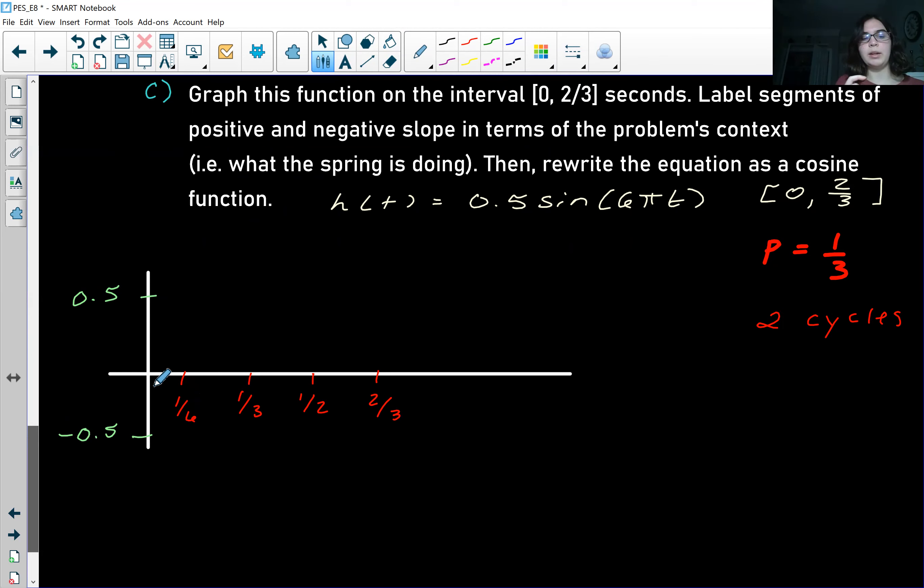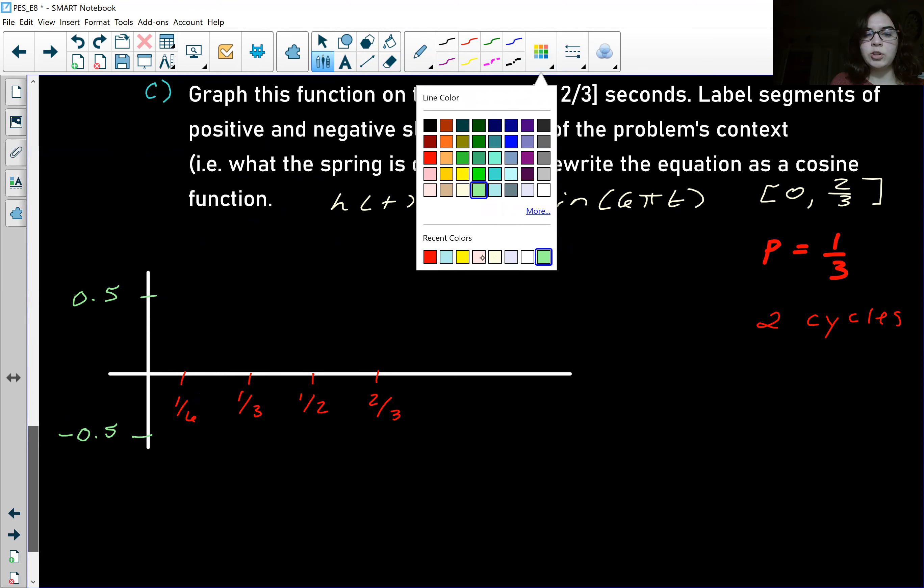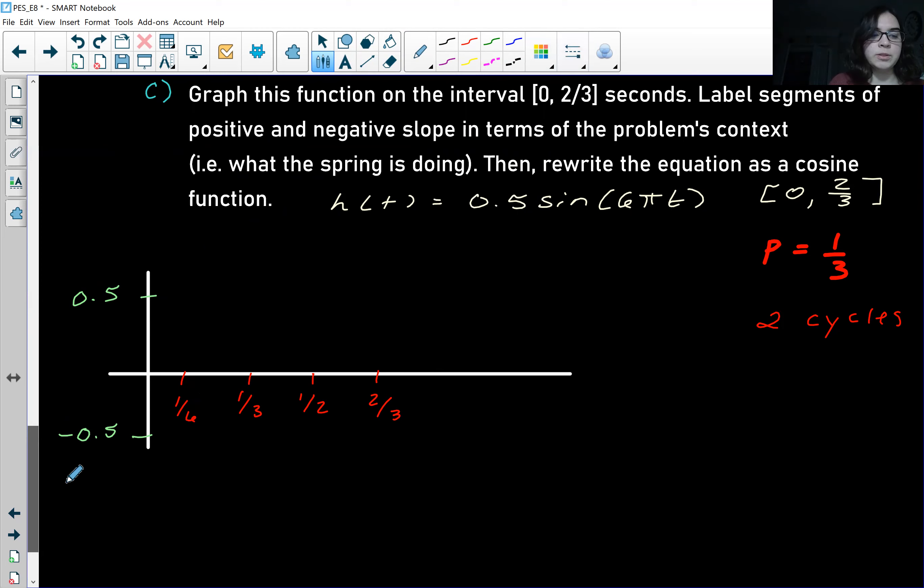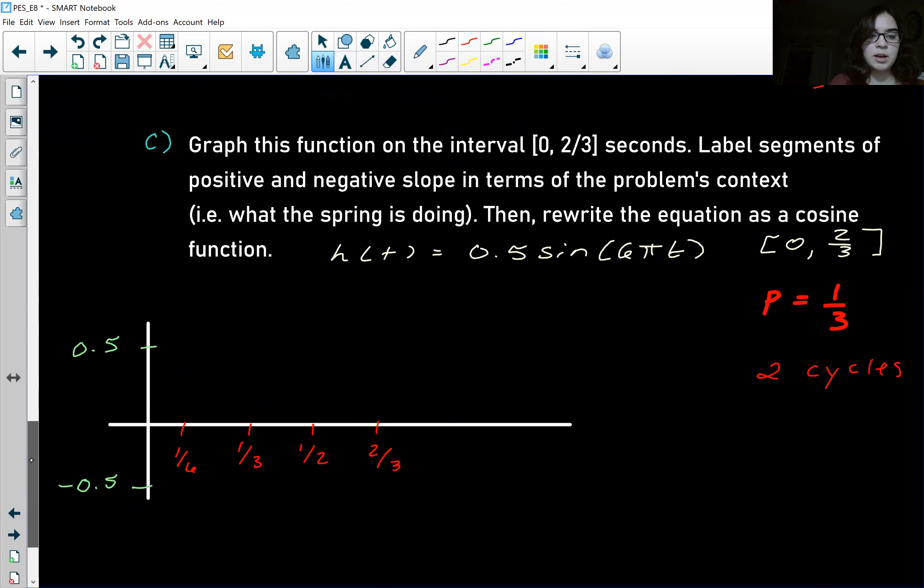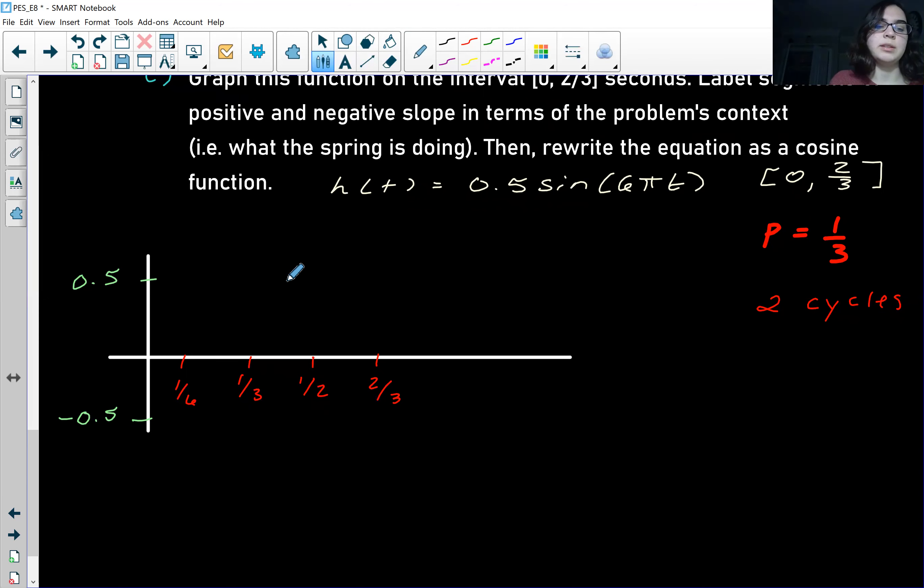So now our graph is all scaled out, and really what we need to do at this point is just fill in the graph according to the intervals that we found in part B. So between zero and one-sixth, our graph is stretched, which means it is positive. I didn't give myself a whole lot of room here, but it's going to go like this. And then it's going to go negative, so it's going to compress. Back to stretch, back to compress, and then back to equilibrium. So that is a really rough sketch, but we can even check ourselves and we can see that there definitely are two cycles in this.